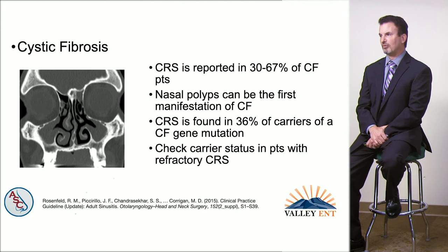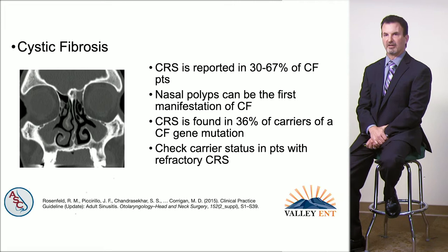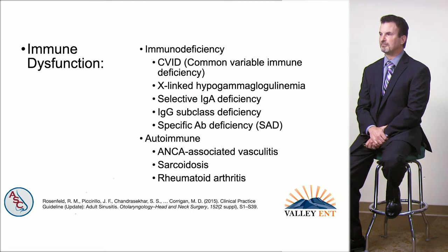CRS is reported in about one-third to two-thirds of cystic fibrosis patients. Nasal polyps can be the first manifestation of cystic fibrosis, especially in young people. CRS can also be found in about a third of cystic fibrosis carriers, so you want to check carrier status in refractory CRS patients.